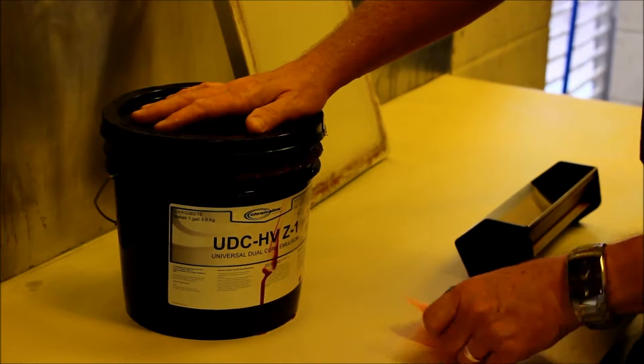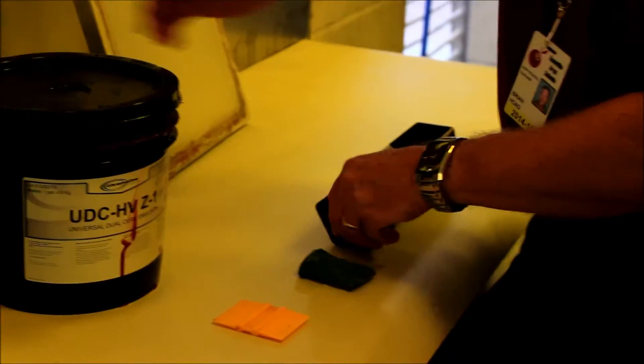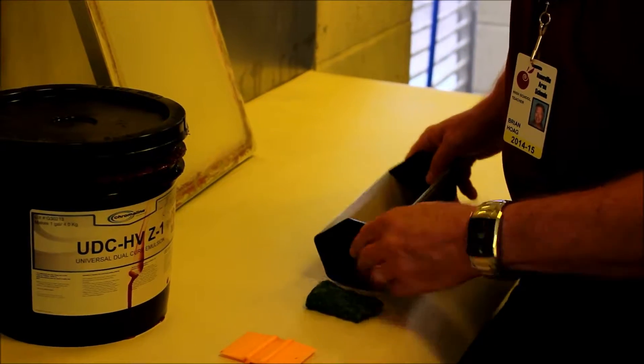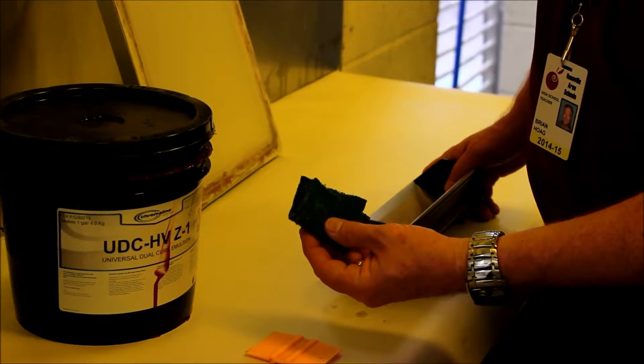So you're going to need your bucket of emulsion, you're going to need another squeegee, you're going to need this little device here called a scoop coater, and you're going to need a scrub pad.